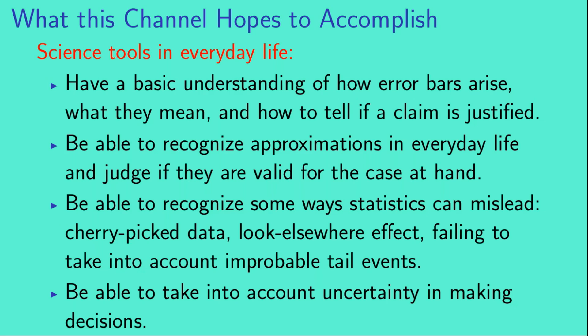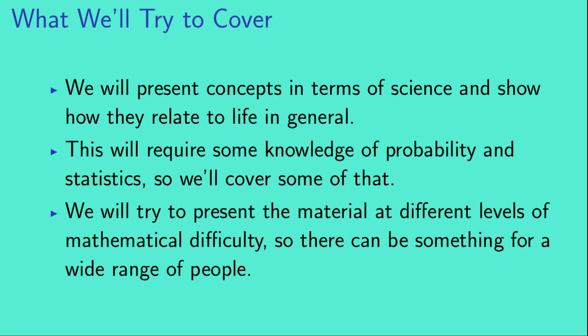We also want to be able to recognize some ways in which statistics can mislead us and send us to the wrong conclusion — in cases where there's cherry-picked data, where the look-elsewhere effect hasn't been taken into account, or where maybe we're failing to take into account improbable tail events. We also want to be able to take into account uncertainty in making decisions. In order to cover those things, we're going to try to present concepts and tools in terms of science and then show how they relate to life in general. This will require some knowledge of probability and statistics, and we will try to present the material at different levels of mathematical difficulty so that there is something to be learned for a wide range of people.